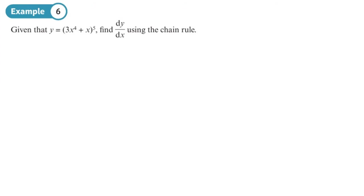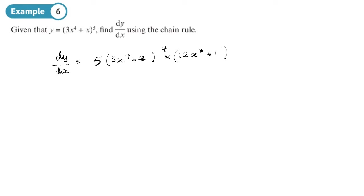So we're going to use that here. dy/dx — this will take seconds. Differentiate the outside: 5 bracket to the 4, with 3x to the 4 plus 5 inside the bracket untouched. Step number 2, multiply by the inside differentiated. The inside differentiated is 12x cubed plus 1. So it's done — differentiate the outside multiplied by the inside differentiated.